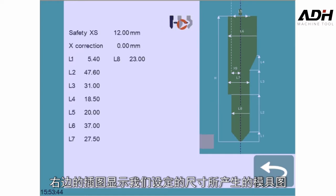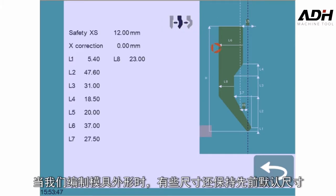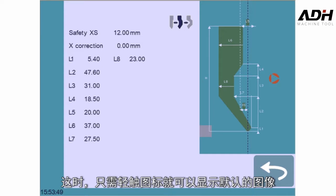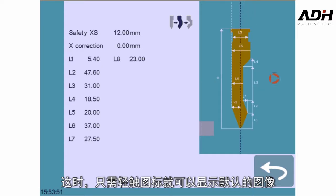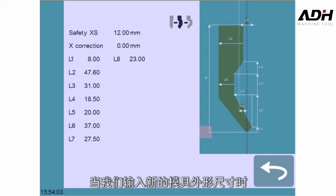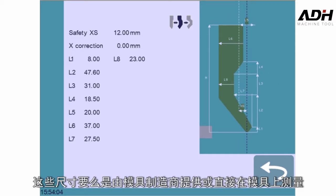The illustration on the right shows the tool resulting from the given dimensions. As those dimensions remain from the previous tool, it can sometimes be a bit difficult to see which dimension goes where. In this case, simply touch the illustration to display the default image of the punch. Let's now enter the new values — they are either given by the manufacturer or directly measured on the tool.